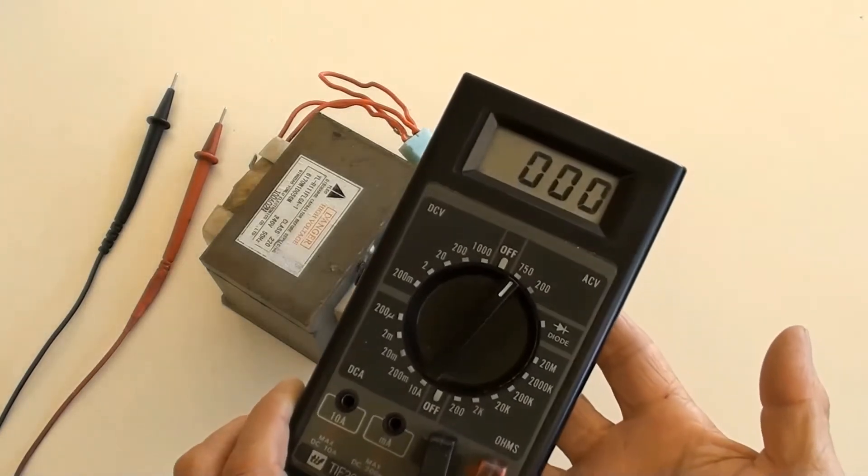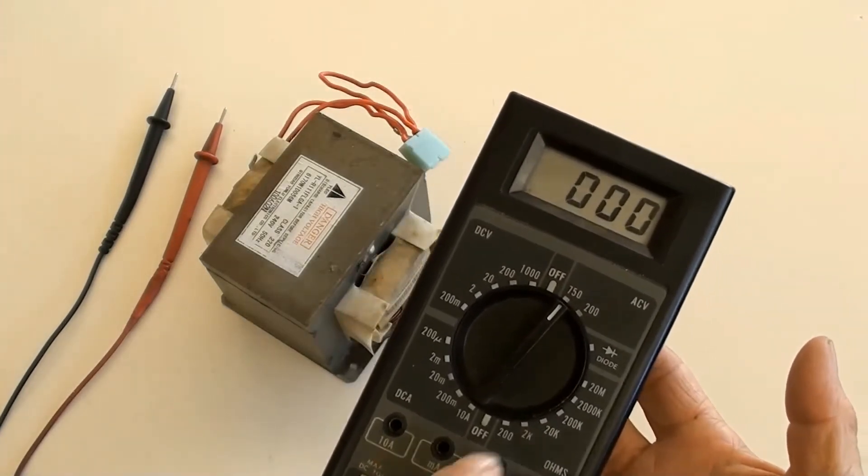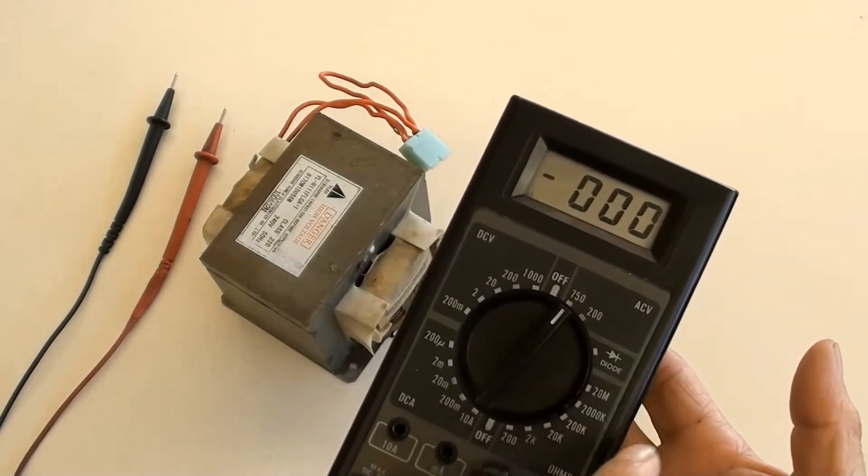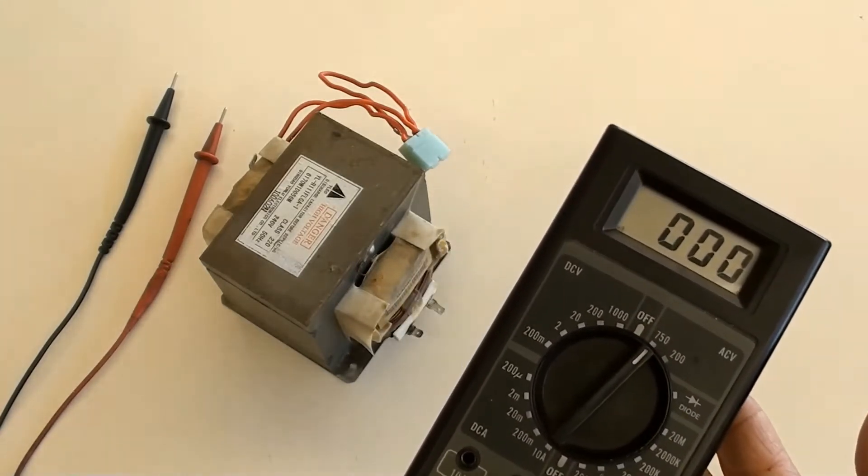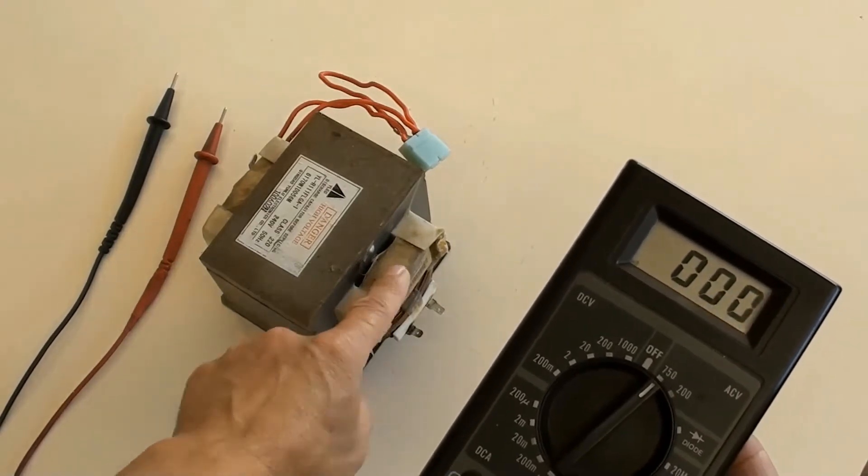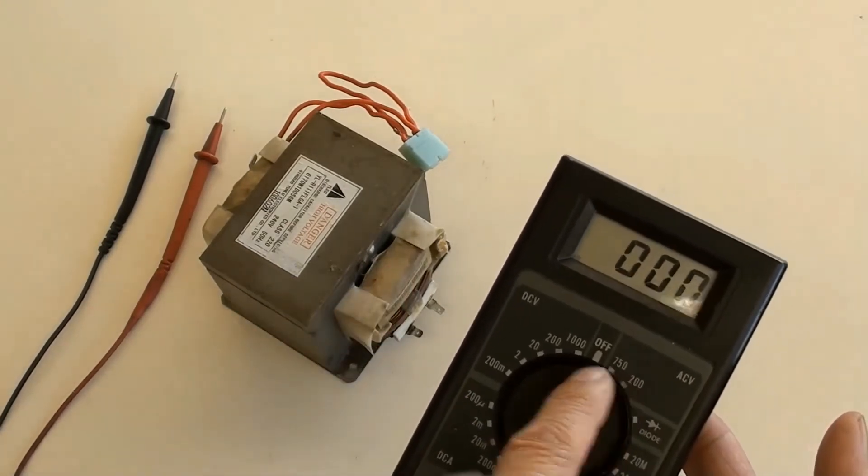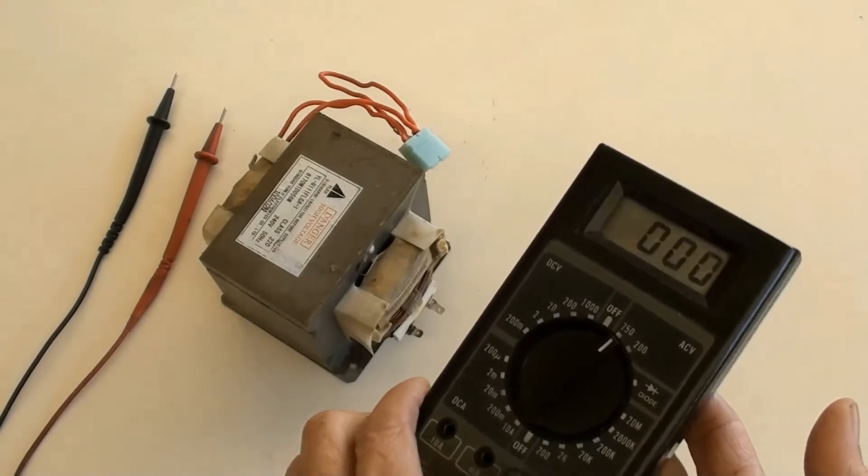Most multimeters can test 750 volts of AC voltage, but high voltage from the secondary winding of microwave oven transformers is about 2500 volts, so a multimeter cannot be used to test it directly.